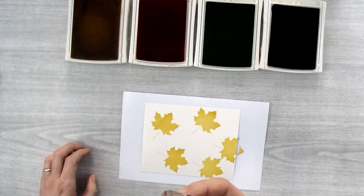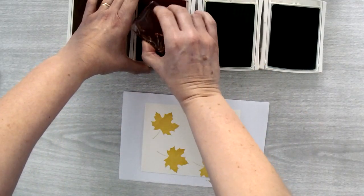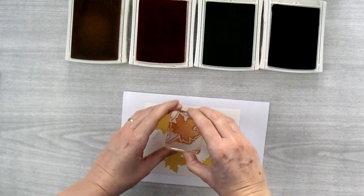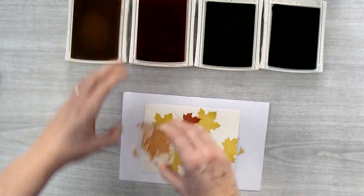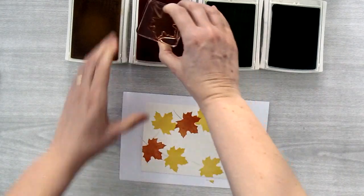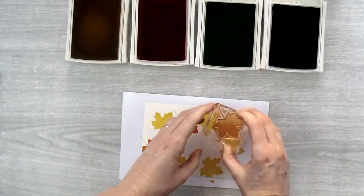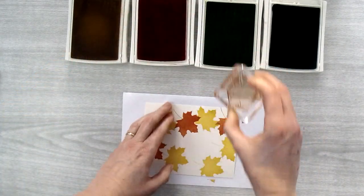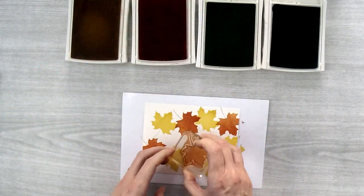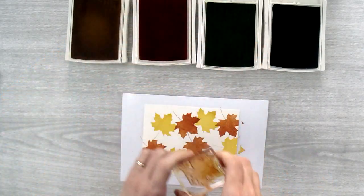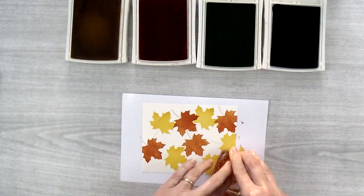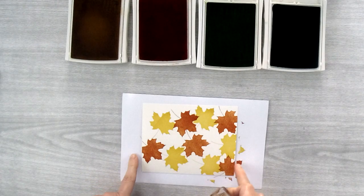Then I'm going to work with the next color which is Tangerine Tango. I'm going to stamp the leaf in between and around these Crushed Curry Leaves and again I'm going to stamp about five leaves and I want to make sure that I'm filling in the white spaces as much as possible.